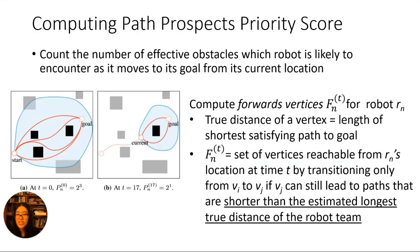To compute the priority score, we need to count the number of effective obstacles, and we also only want to count those we're likely to encounter as we move towards our goal. We formalise this by defining a set of forwards vertices, indicated by the blue areas. The forwards vertices are reachable from the robot's current location if we only transition to vertices that can still lead to paths shorter than the longest true distance of the robots in the team.